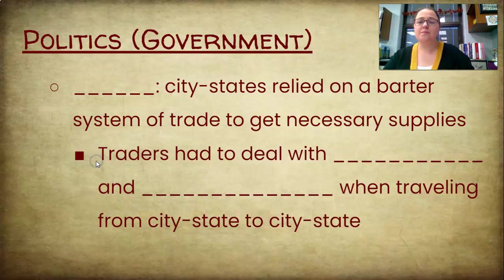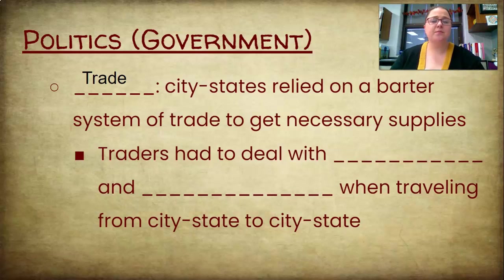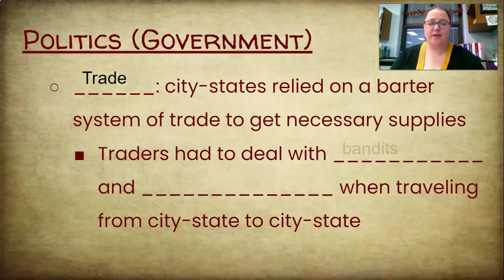The last main threat city-states faced was the challenge of trade — how are we going to get what we need? No civilization has everything it needs on its own. In Mesopotamia, they relied on a barter system. Trading was not easy: it meant traveling long miles with no cars, no horses, no airplanes. Sometimes they could use a boat, but often they were walking on foot with a donkey, or later with a cart — a dangerous job because you could run into bandits.